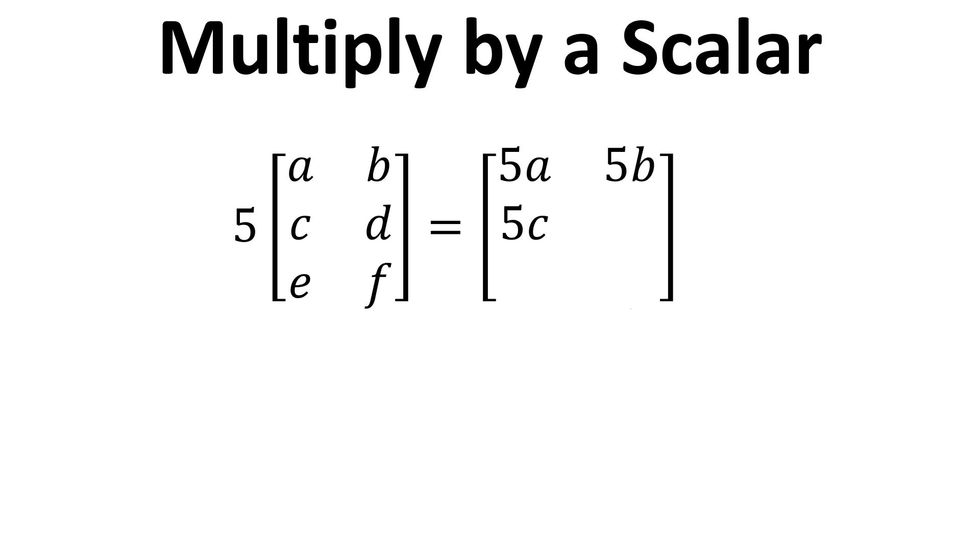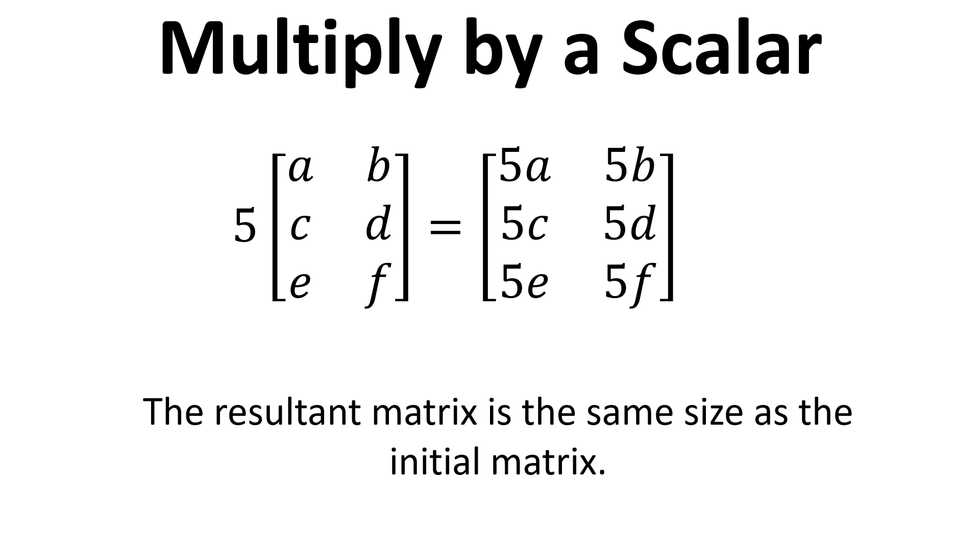5B, 5C, and so on. We've multiplied all of those up, so again fairly straightforward in terms of how we do that. The answer matrix is the same size as the initial matrix; it's just that we've multiplied all the entries by this value outside.